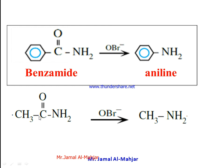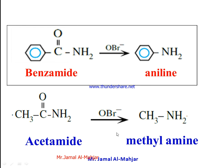This is acetamide: CH₃-C(=O)-NH₂. When you see OBr⁻ or NaOBr, just remove the C=O group and write the rest of the compound. So you get CH₃NH₂, which we call methylamine.